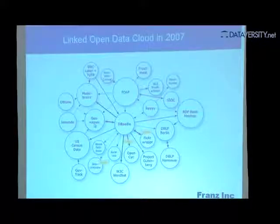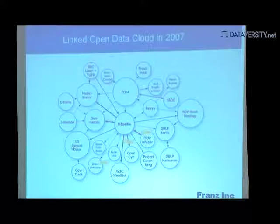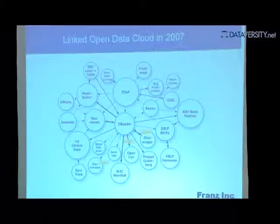Then you have GeoNames — a database with seven million places on Earth, with latitude, longitude, alternative names, etc. You might have the US Census database of the year 2000. What you see is that all these databases are linked together. Most of them are just files with millions and billions of triples, or SPARQL endpoints — where SPARQL is the query language for RDF graph databases.